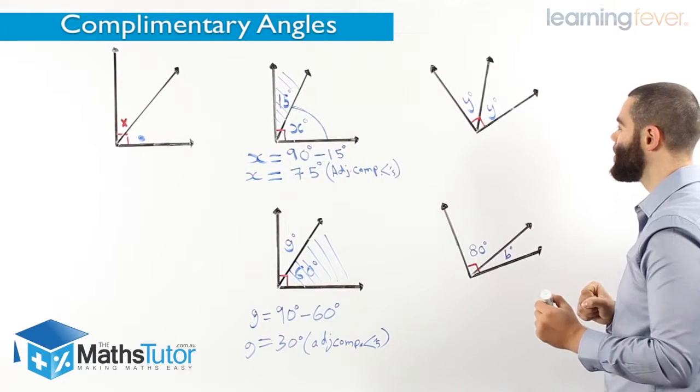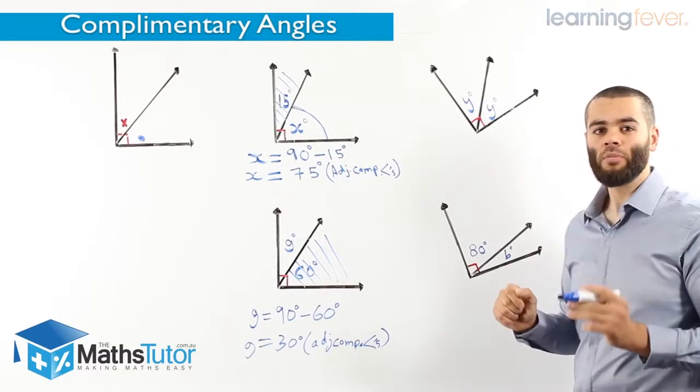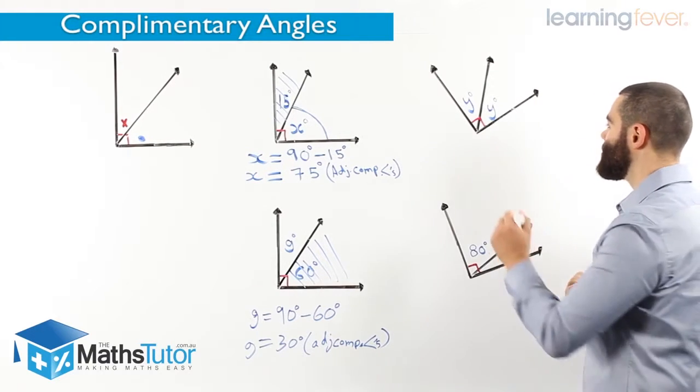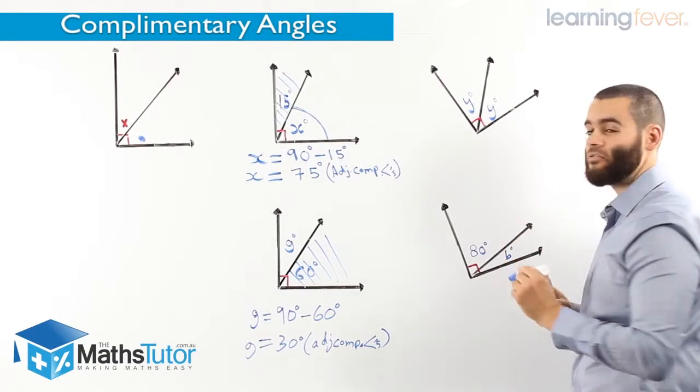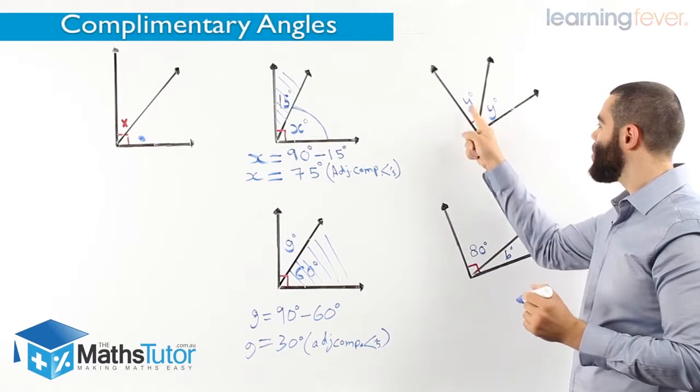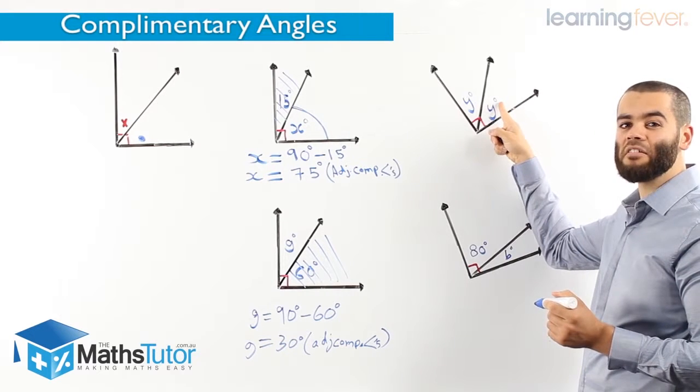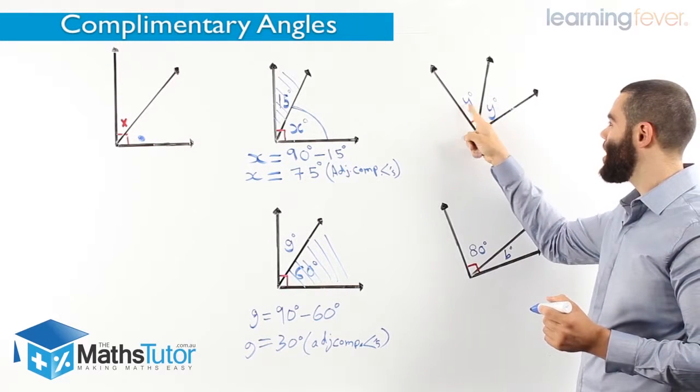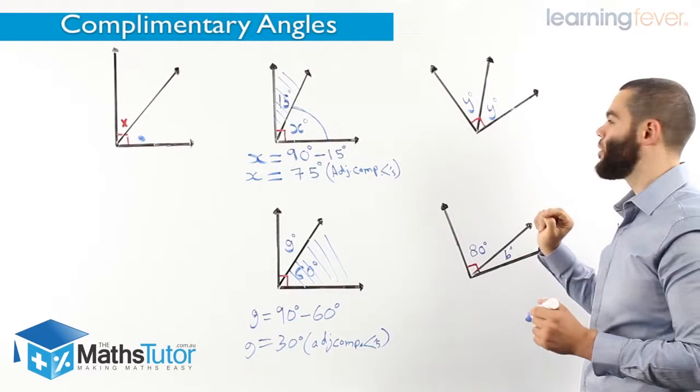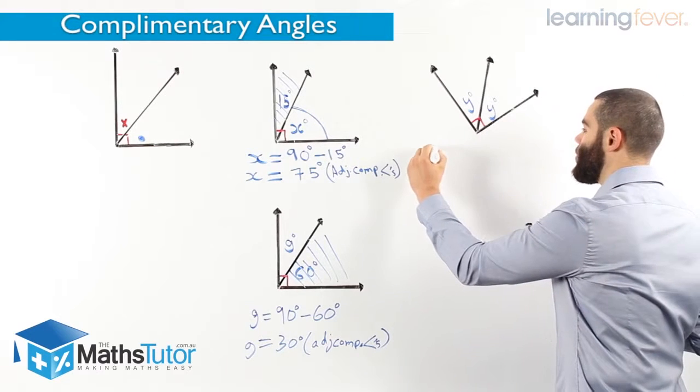Another example. We notice here, complementary angles, and we also notice the complementary angles have been split in half. How do you know half? Because y and y. That means this angle here is exactly the same size as that angle there, because y and y are the same pronumeral. So we want to work out y.